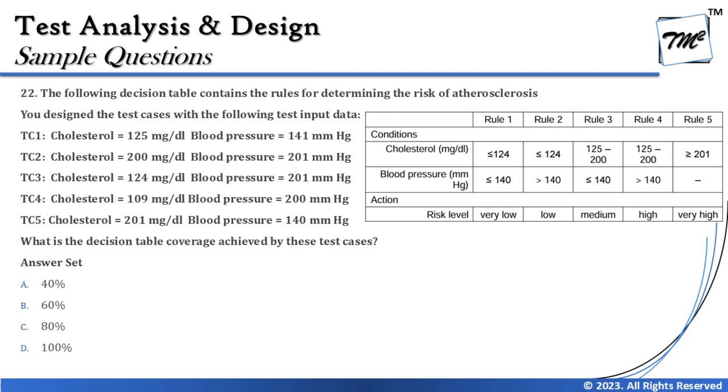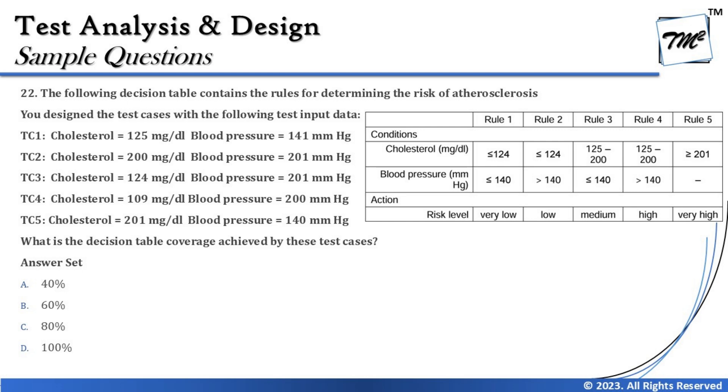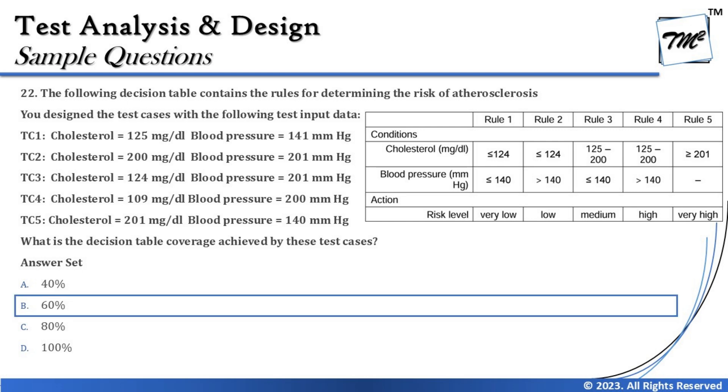Three rules covered out of five rules gives us three divided by five multiplied by 100, which is 60%. So the right answer for this particular question is B — 60% — because we have covered three rules out of five, and three divided by five gives 60% coverage on the decision table.